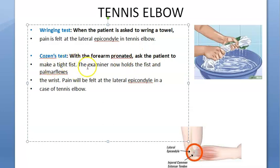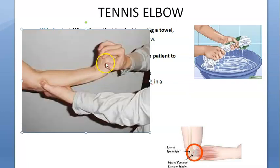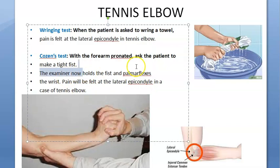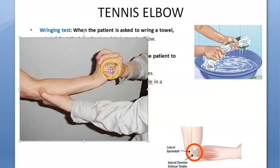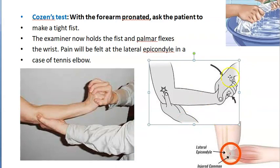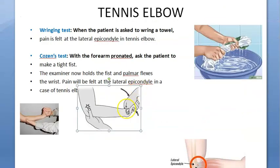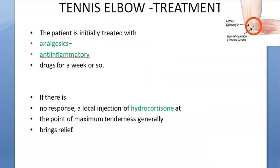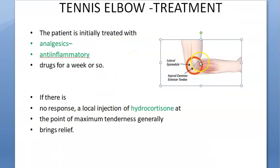The second is Cozen's test: the forearm is pronated, the patient makes a fist, and the examiner holds the fist and palmar flexes the wrist. This produces pain at the lateral epicondyle, confirming tennis elbow.